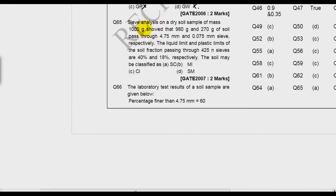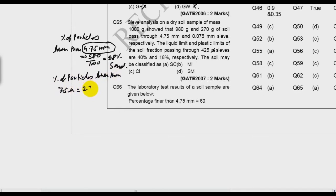A sieve analysis on a dry soil sample of mass 1000 gram showed that 980 gram and 270 gram of soil passes through 4.75 millimeter and 0.075 millimeter sieve respectively. The liquid limit and plastic limit are 40 and 18 respectively. The percentage of particles lower than 4.75 millimeter is 980 divided by 1000, so 98 percent. This may be sand not gravel. Percentage of particles lower than 75 micron: 270 by 1000, so 27 percent only. So it may be sand.